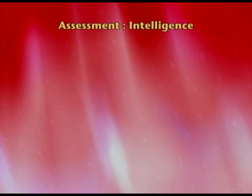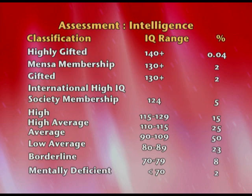The last topic for today is assessment. Here we look at the IQ range and the classification table. We have a classification called average — 50% of people lie in this category, with an IQ of 90 to 110. When we move higher or lower, it is always plus or minus 10. So 110 to 120 is high average, and 80 to 89 is low average. Going further, 120 to 130 is gifted, above 130 is also a distinct category, and 70 to 79 is borderline.